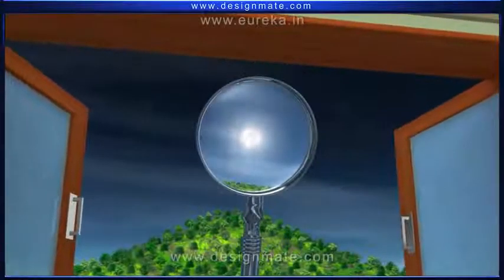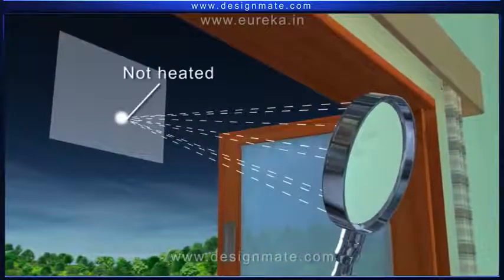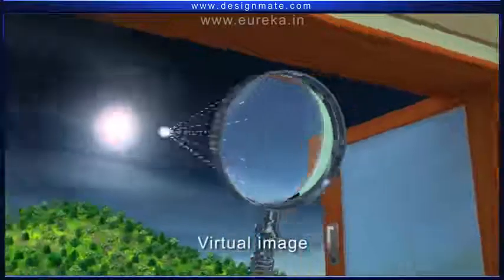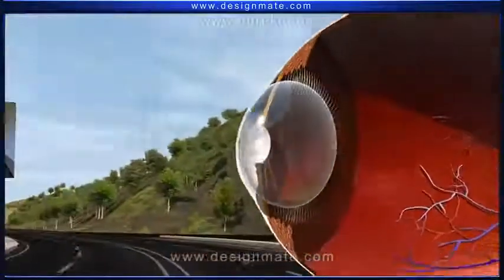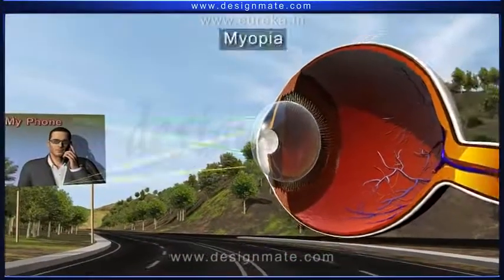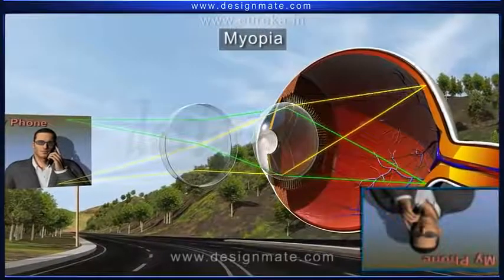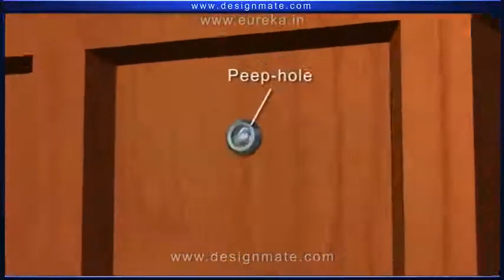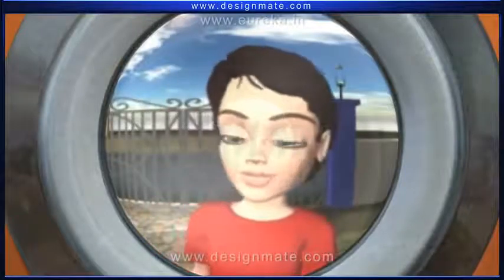The sun viewed through a concave lens would appear as a point. If you place a paper at this point, it would not be heated. The image formed in this case is a virtual image. The concave lens is used to correct short-sightedness in people suffering from myopia. A concave lens is also used in the peepholes of doors to get a minimized image of the person on the other side of the door.